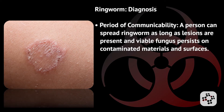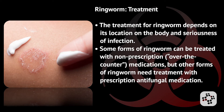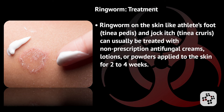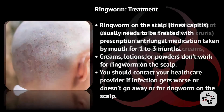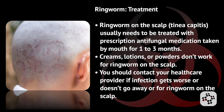There is a period of communicability — a person can spread ringworm as long as lesions are present and viable fungus persists on contaminated materials and surfaces. The treatment for ringworm depends on its location and how serious the infection is. Some forms can be treated with over-the-counter antifungal creams, lotions, or powders applied to the skin for two to four weeks. Ringworm on the scalp usually needs prescription antifungal medication taken by mouth for one to three months, as topical treatments do not work for scalp infections.